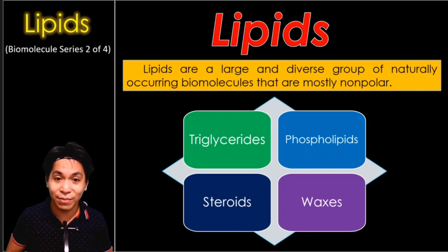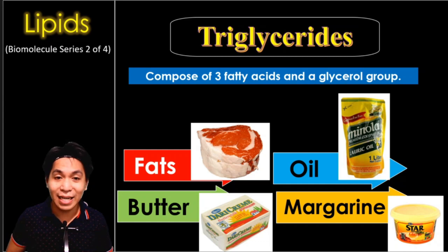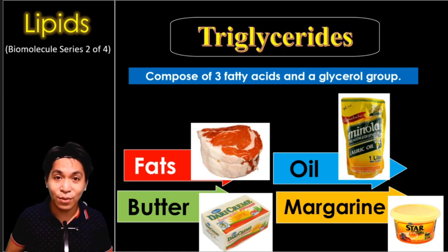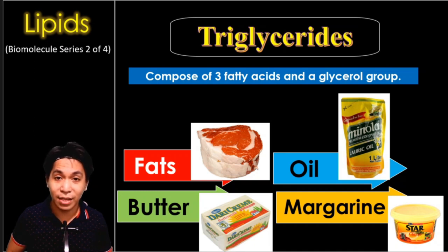Let's get to know each one of them, starting with triglycerides. Triglycerides are lipids which are composed of three fatty acids and a glycerol group. Triglycerides are used by our body as a long-term source of energy. Some examples of triglycerides are fats, oils, butter, and margarine.